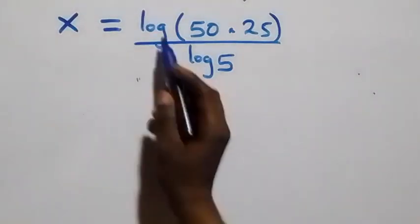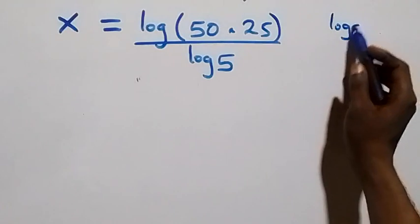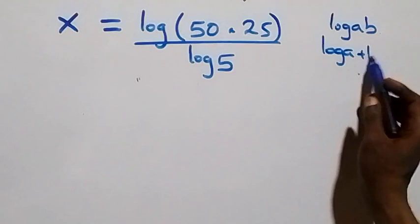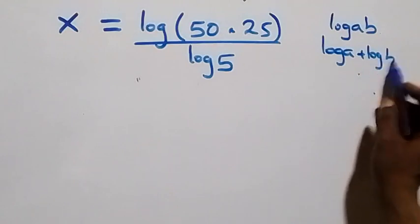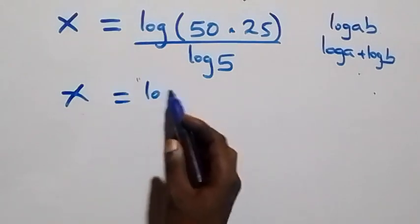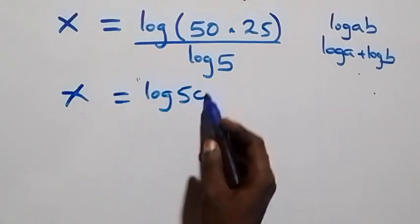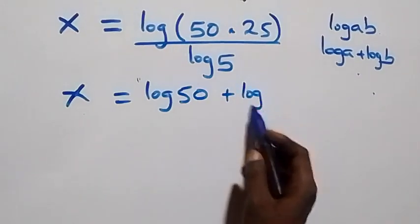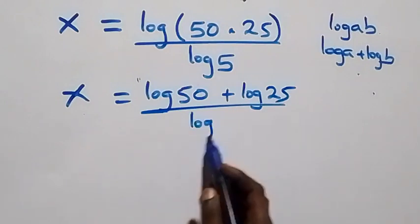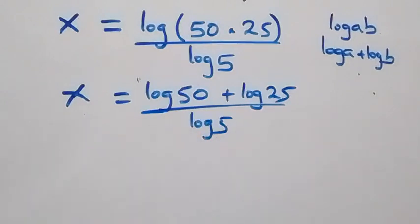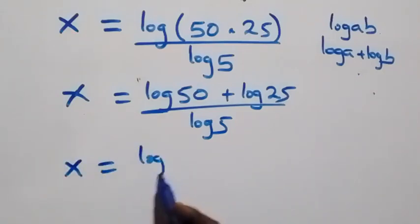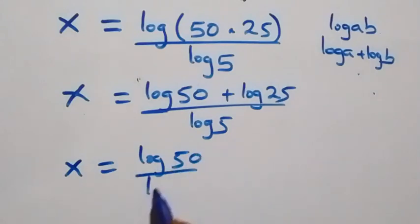That is x. What we have here follows from the law of logarithms. We have log of a times b, which is the same thing as log a plus log b. Then what we have here becomes x equals to log 50 plus log 25, over log 5.